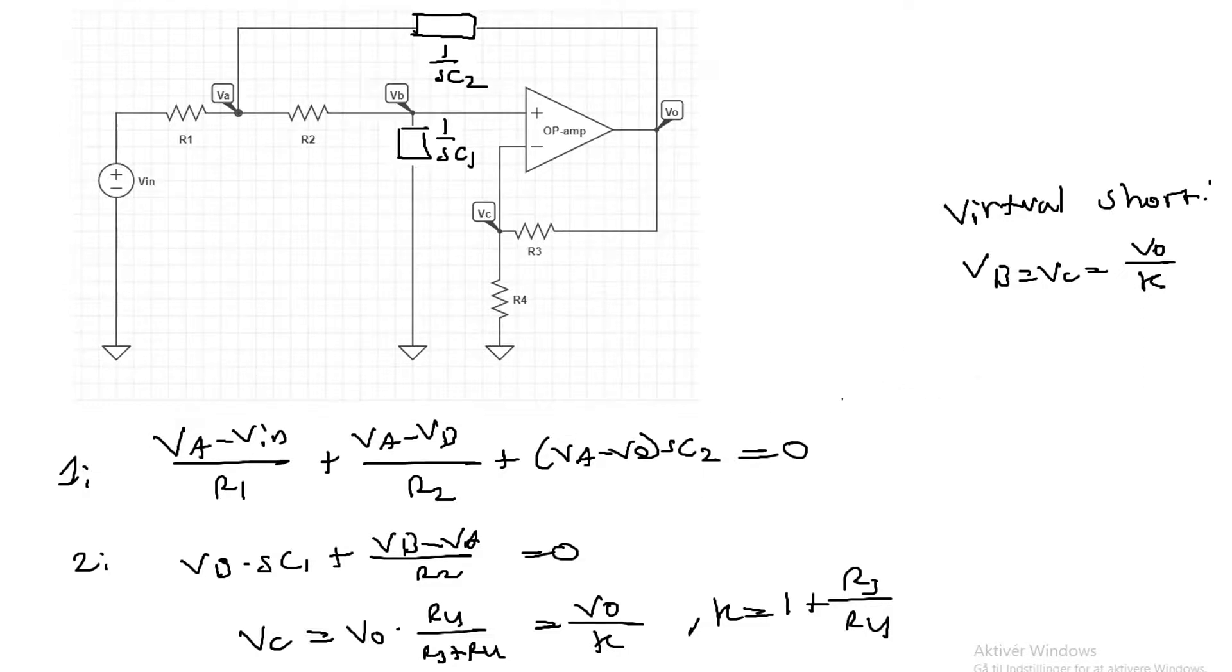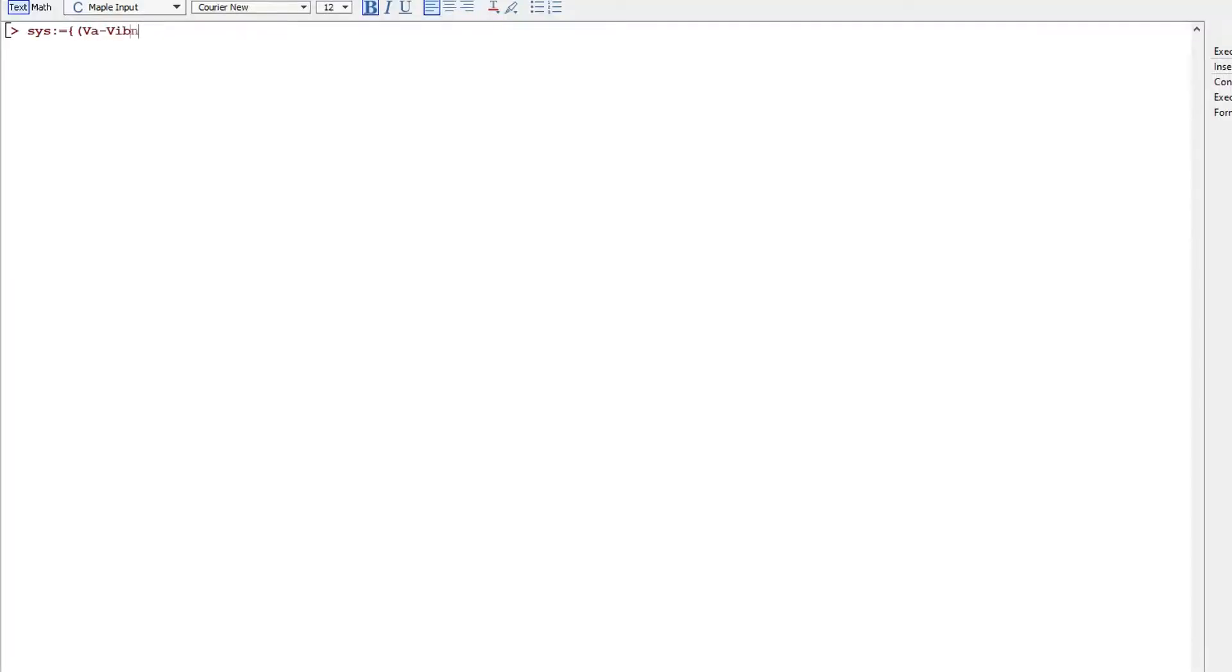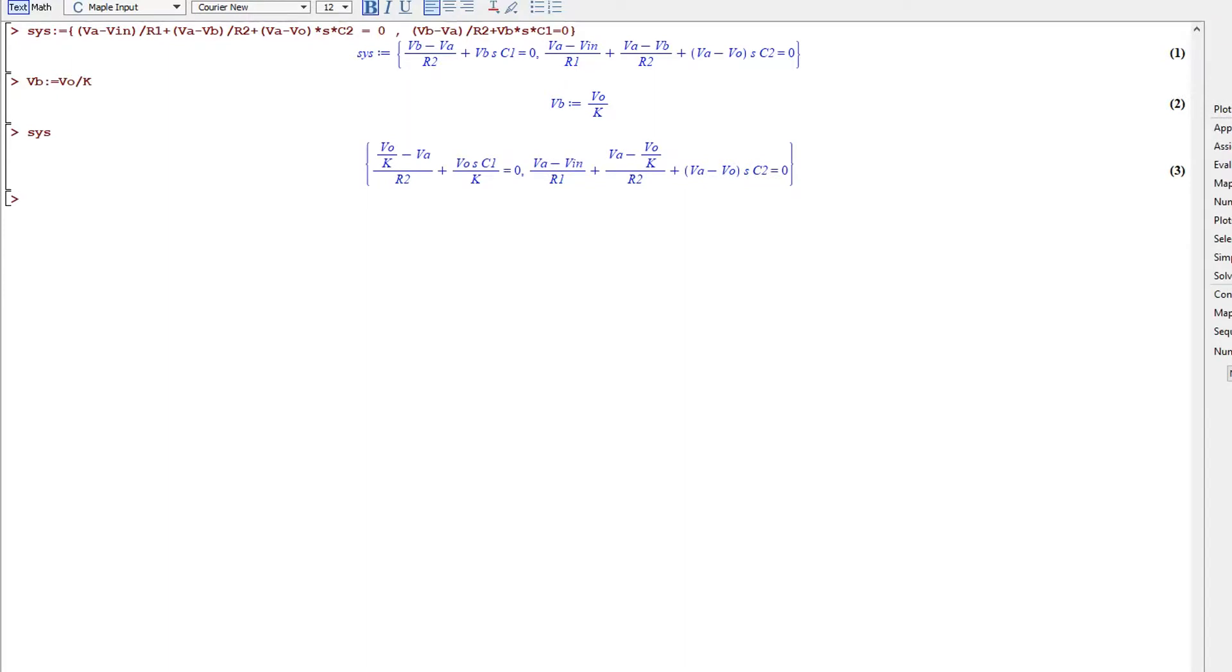Let's write these node equations and constraints up in Maple and see what we get. Now we have written the node equations up and the constraint. Let's now solve the system of equations with respect to va and vo.